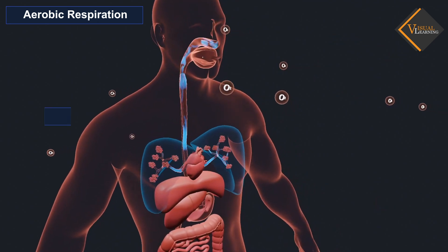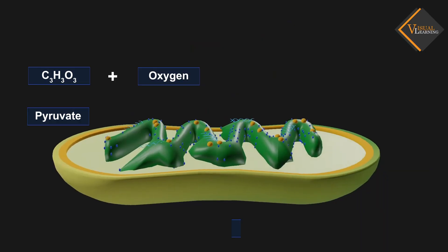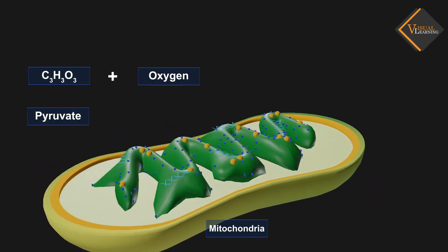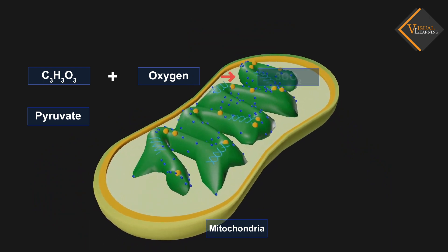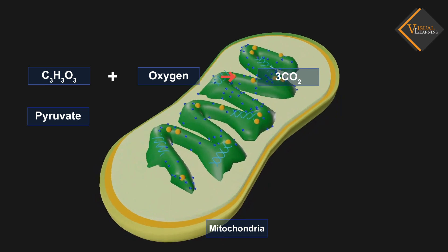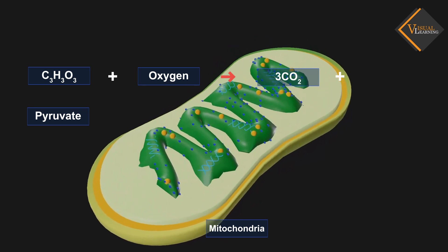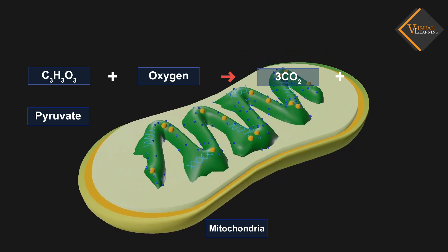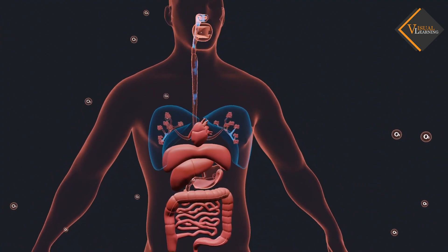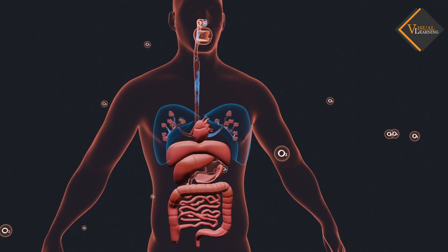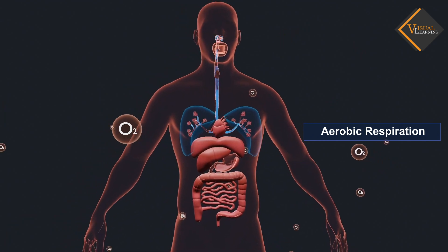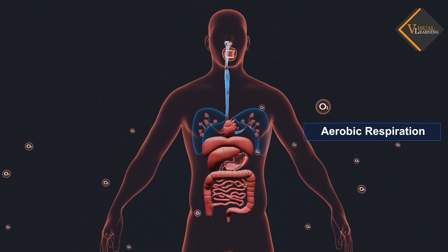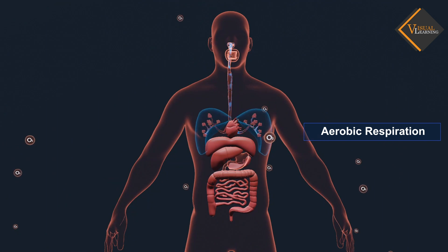Breakdown of pyruvate using oxygen takes place in the mitochondria. This process breaks up the 3-carbon pyruvate molecule to give 3 molecules of carbon dioxide. The other product is water. Since this process takes place in the presence of air, it is called aerobic respiration. The release of energy in the aerobic process is a lot greater than in the anaerobic process.